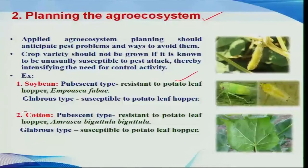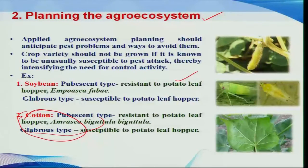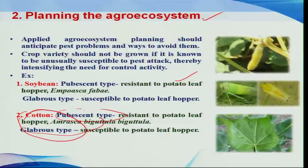Here is another example in cotton, wherein a sucking pest like leafhopper is one of the very important pests. It attacks heavily on the glabrous type of varieties. So you have to select the pubescent type, whereby the attack of this cotton sucking pest is less.